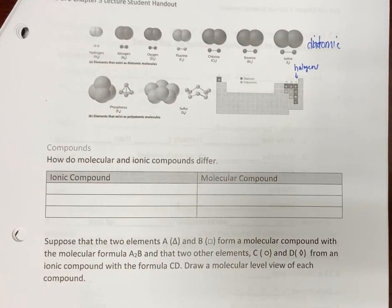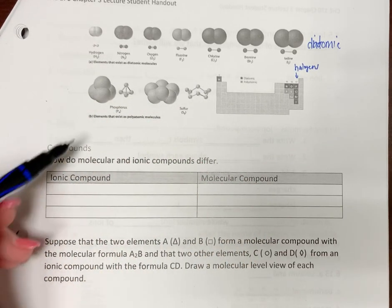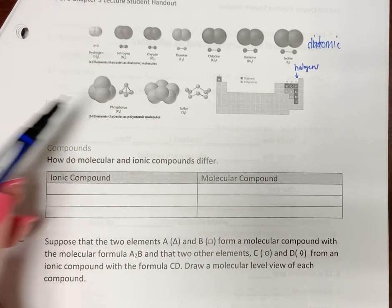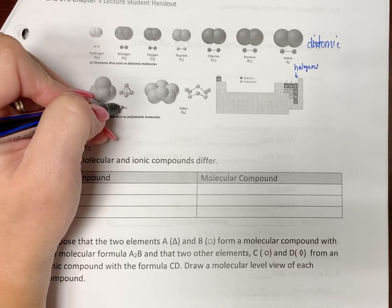Di meaning two. Now, there are also others meaning phosphorus, sulfur. There's not a picture of selenium. But these exist as more than two atoms of the same element. Phosphorus exists as P4 out in nature.